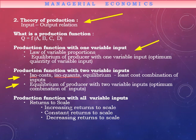For the production function with all variable inputs, we have returns to scale. Increasing returns to scale means with less input you can produce more. Constant returns to scale means with the same amount of input you produce the same quantity of output. Decreasing returns to scale means with more inputs you are producing fewer units of output.